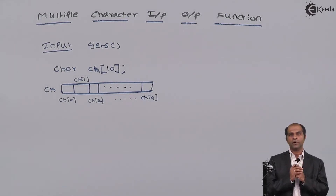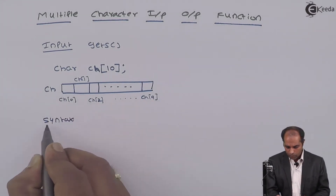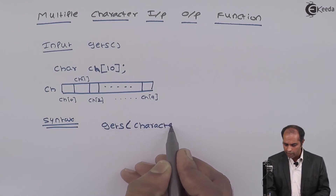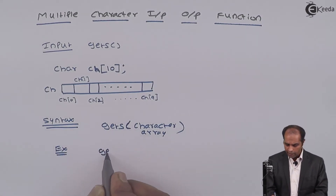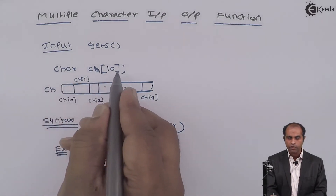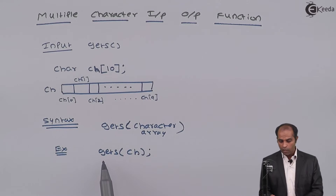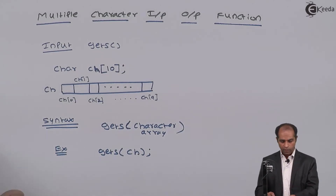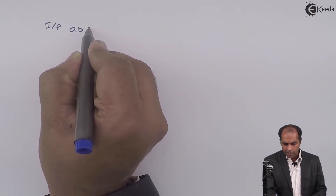Such character array variables should be used with the `gets` function. The syntax is: `gets(character_array)`. For example, if the character array is `ch[10]`, I write `gets(ch)`. This means `gets` is ready to store a set of characters into the array `ch`. For example, assume the input is 'a', 'b', 'c' and then I hit the Enter key.